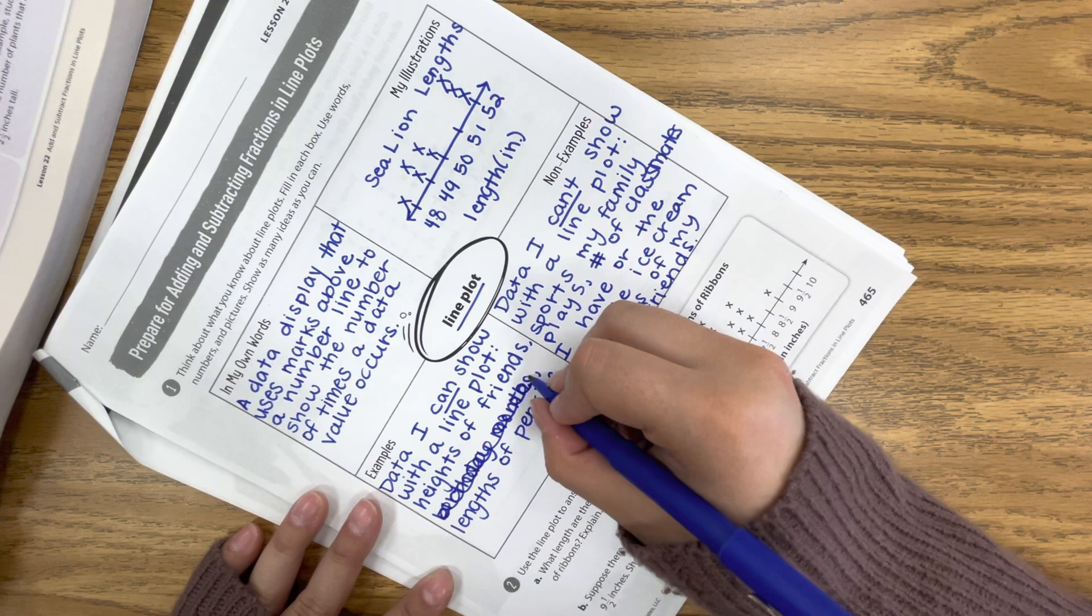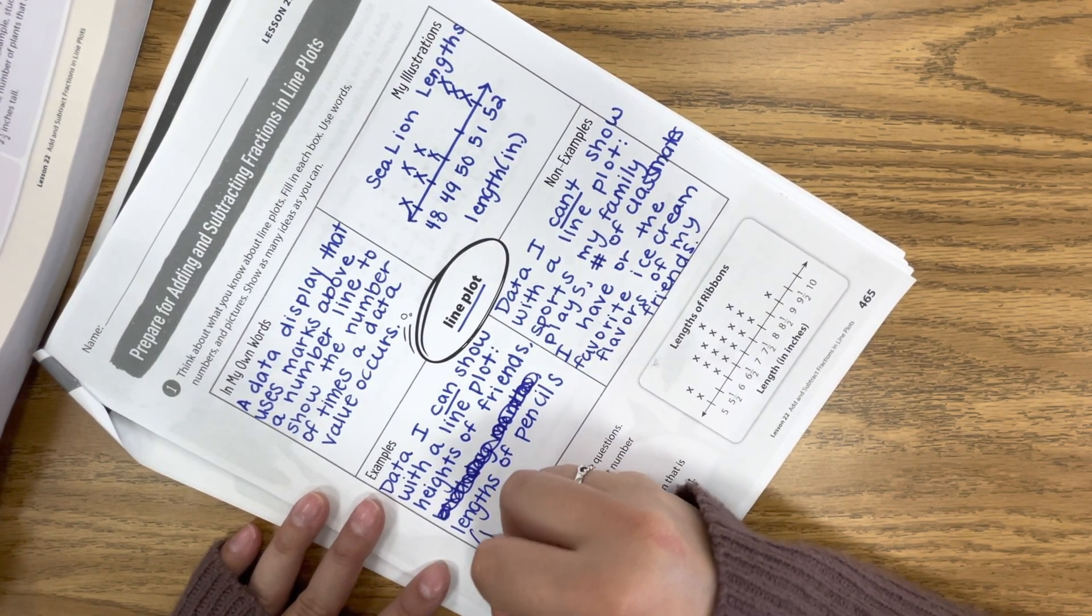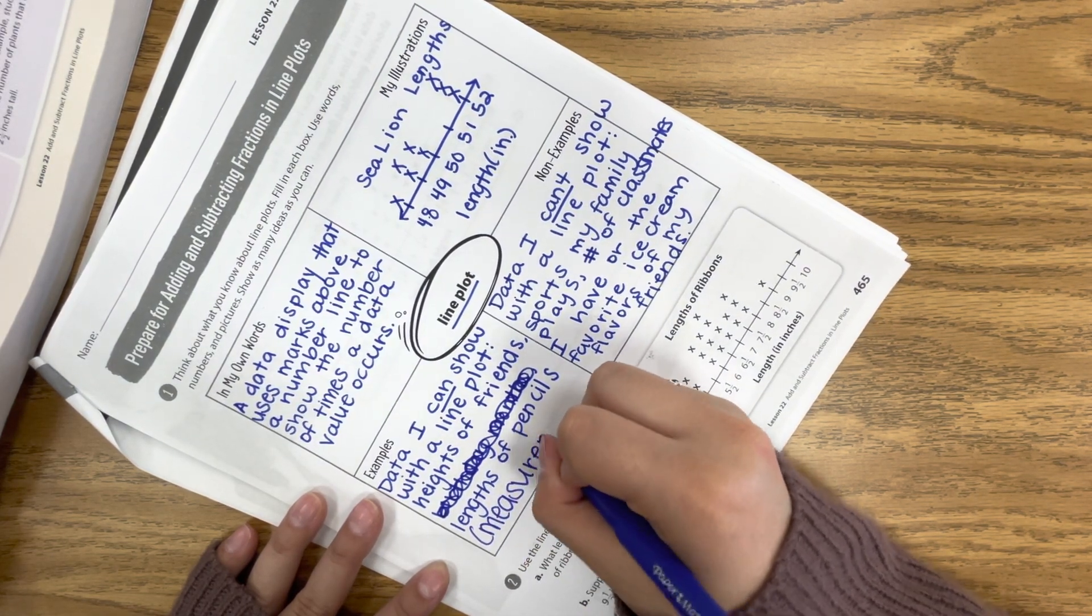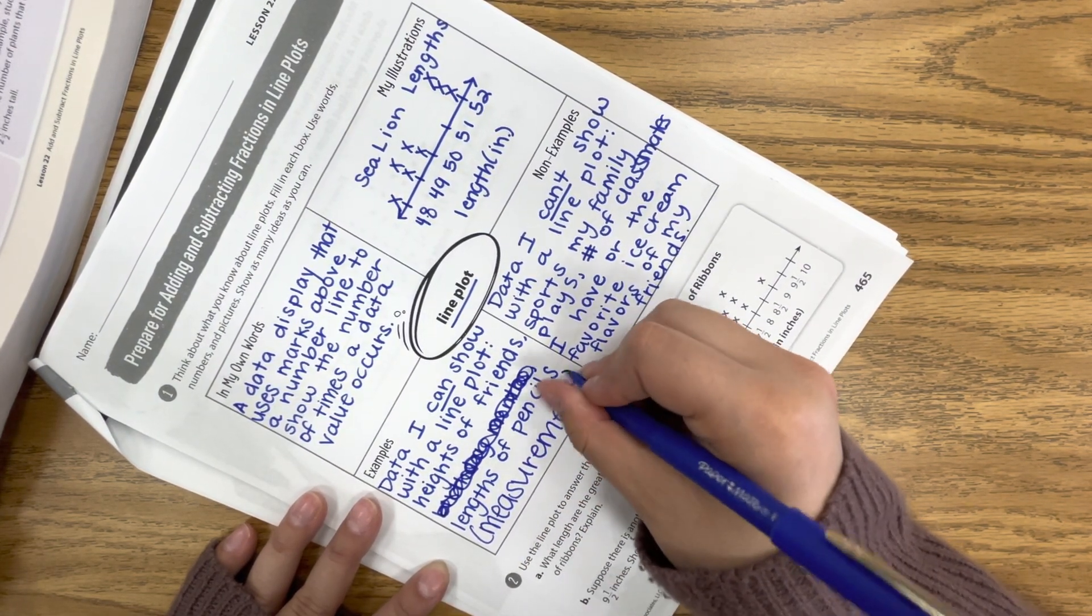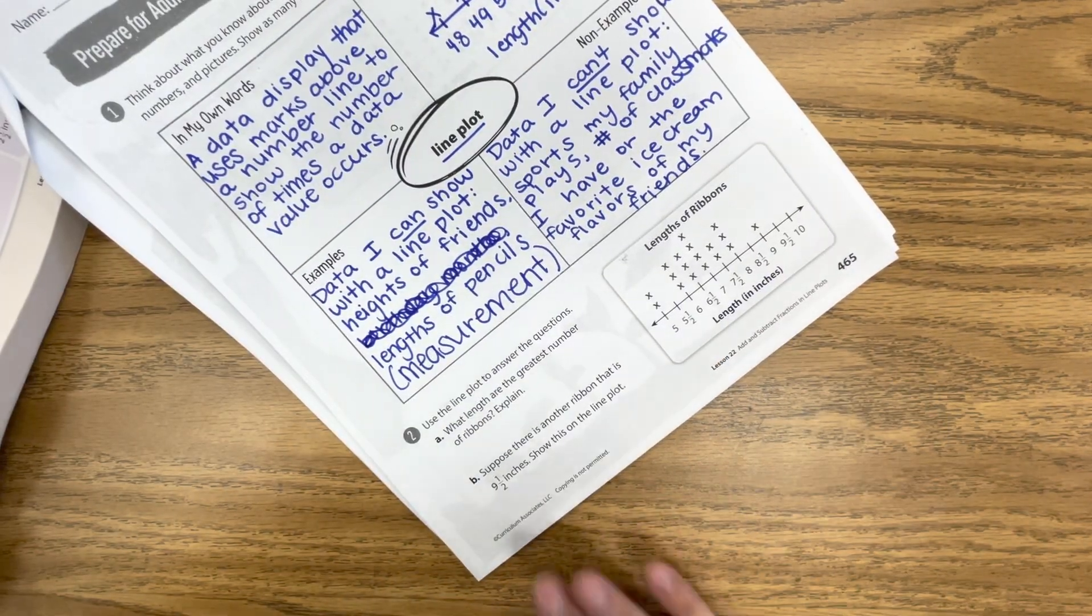So this one has to be all about measurement. So that's a little key there. For a line plot, you have to have some type of measurement. I apologize for that. Oopsie. Now you don't have to do number two. If you want to, feel free to get some extra practice with reading the line plot.